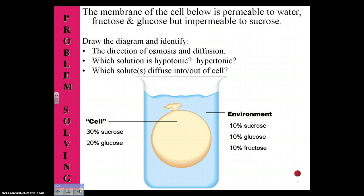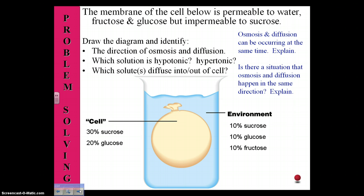A couple of extension questions just to get you really worked up. You may have noticed that diffusion and osmosis can be operating at the same time and curiously in opposite directions — explain why that might be. If you need an extra challenge, try to rearrange this cell diagram to build a situation where osmosis and diffusion are happening in the same direction.